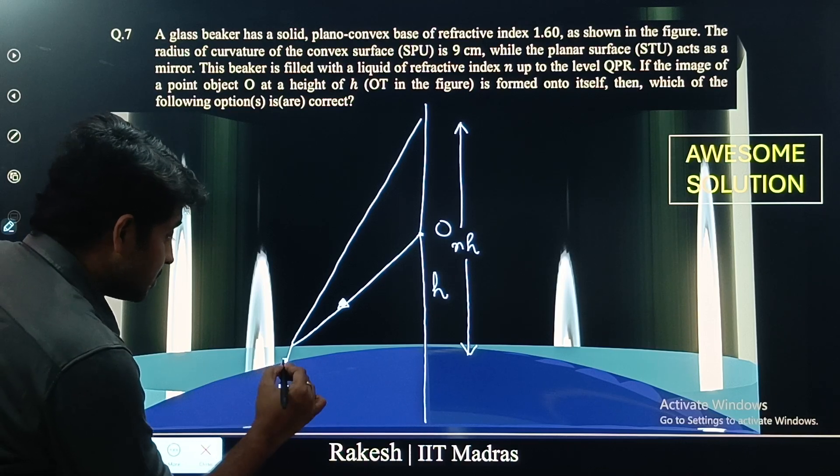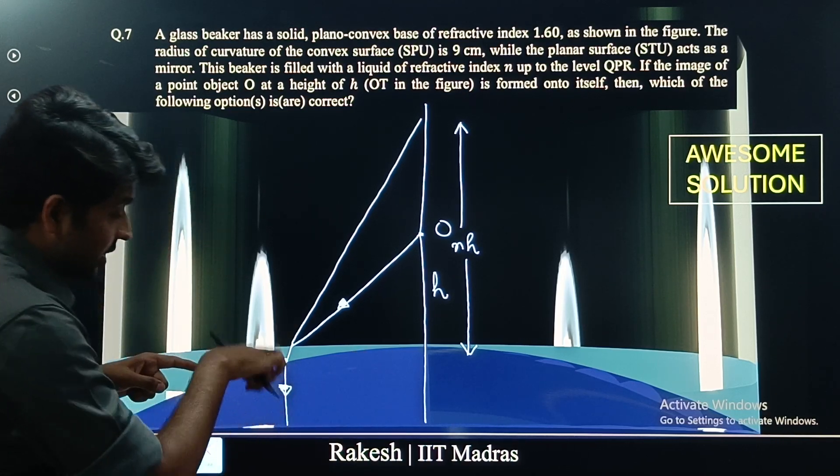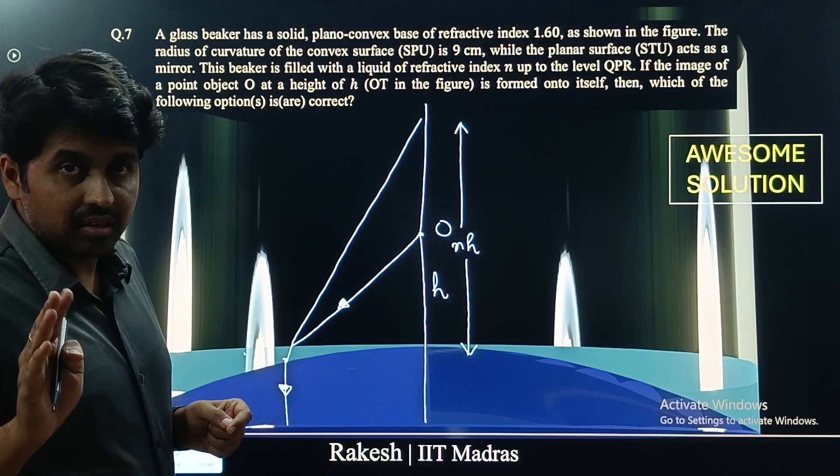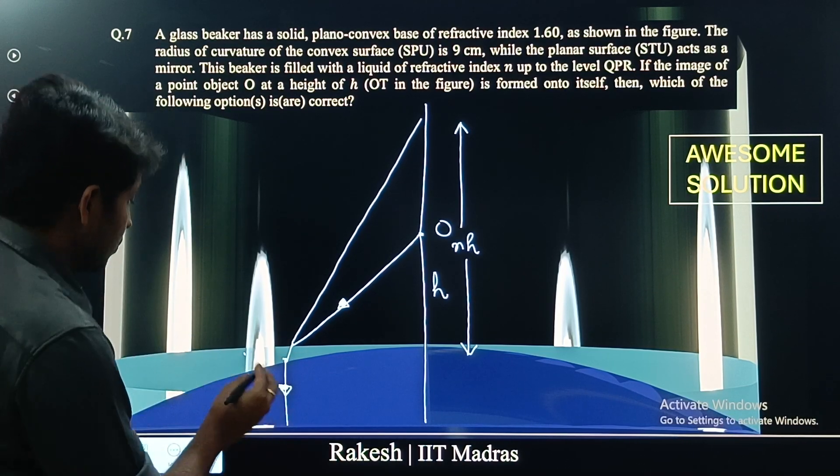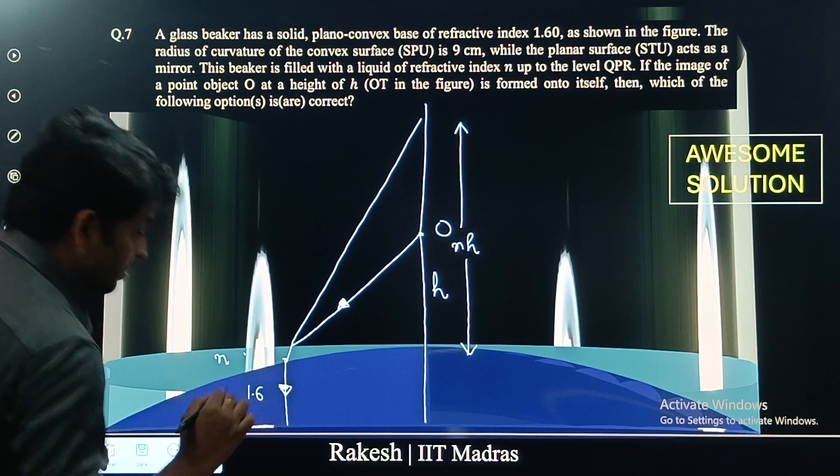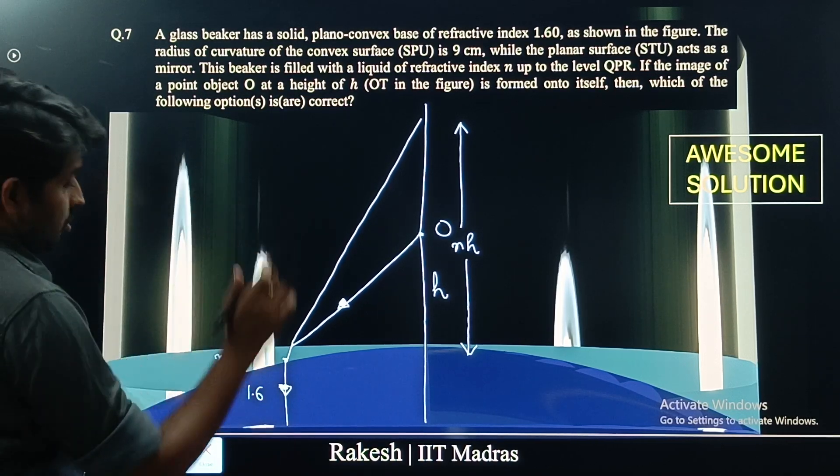What I will do is at this surface, at the interface of this liquid and the lens, I am going to write the refraction at spherical surface formula. This refractive index is n and this is 1.6. Let us write the formula.